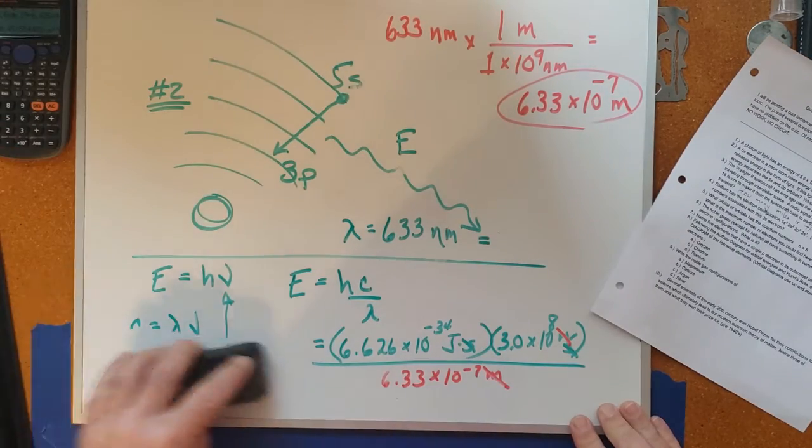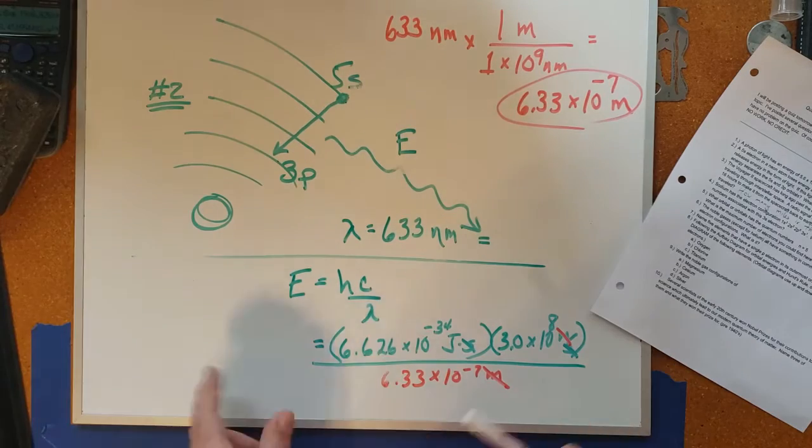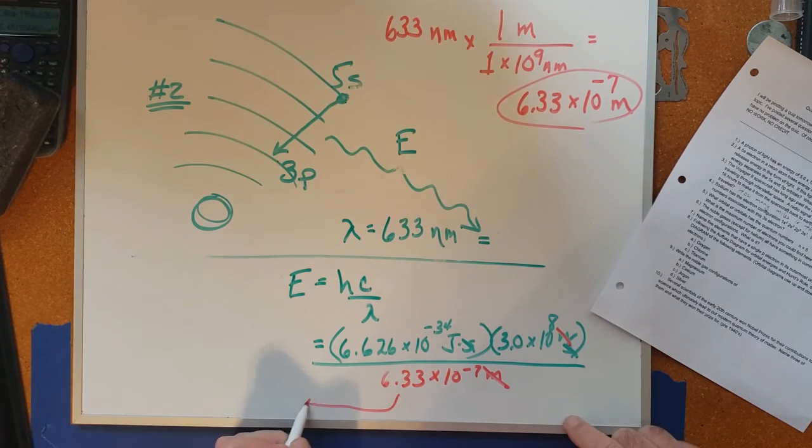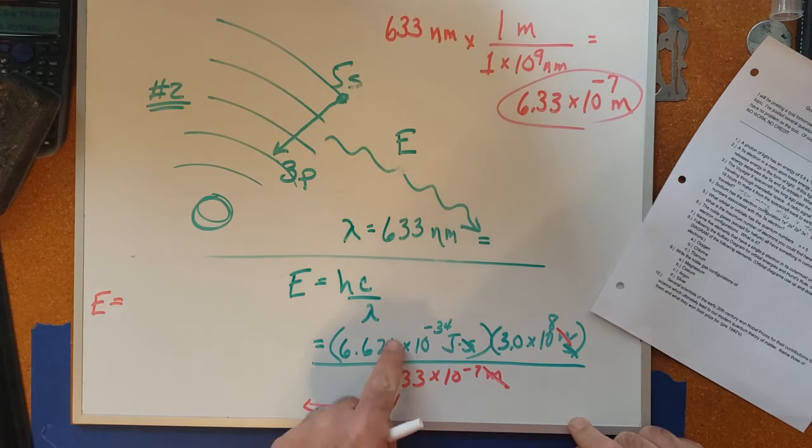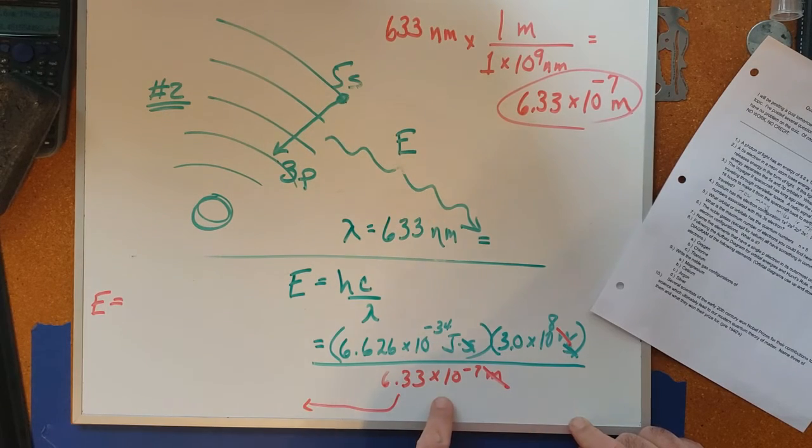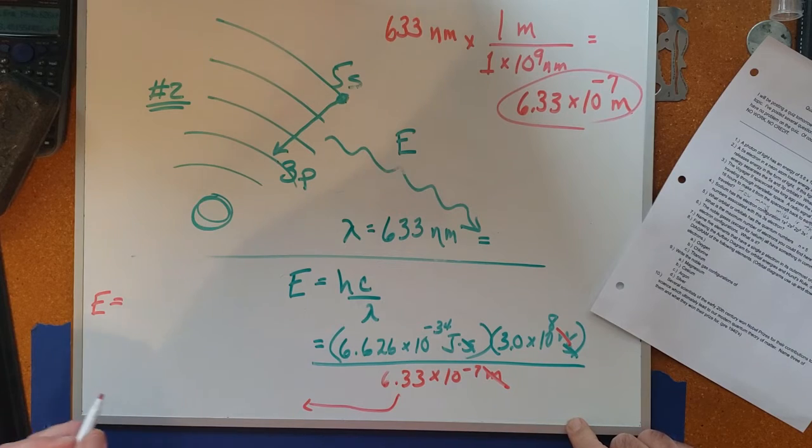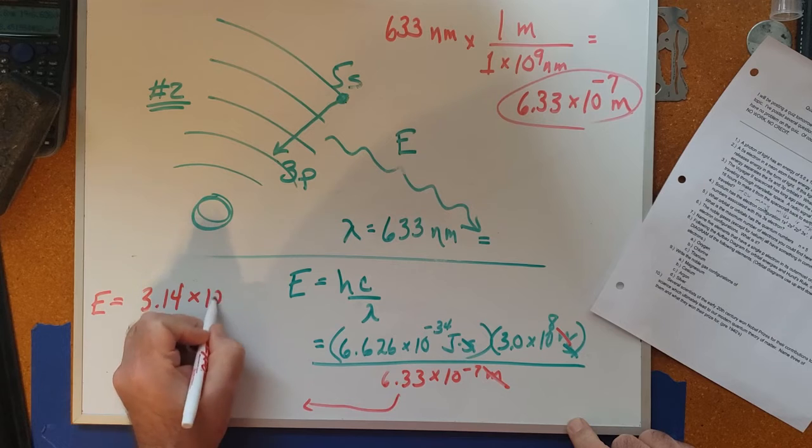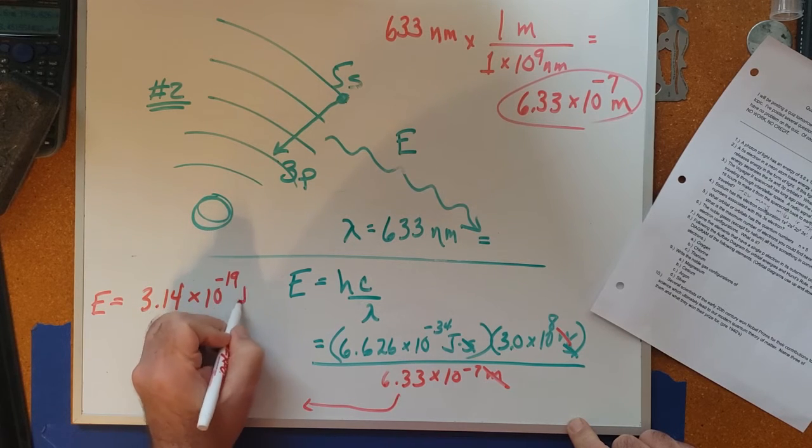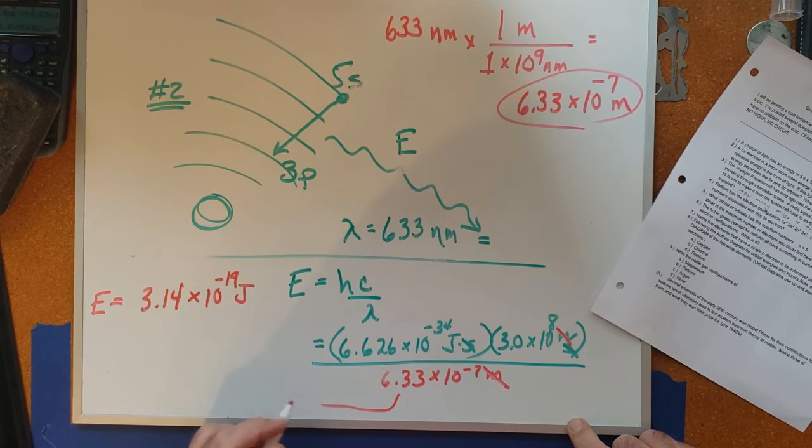Let me make some room over here, and I'll take and move our answer over here. So E is going to be equal to this times this divided by all of that. And when you do that, you get 3.14 times 10 to the minus 19 joules.